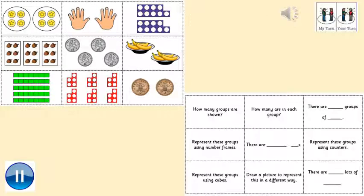So I've got a task here for you to do to get those brains working. We've got some groups in the pictures and we have some questions. Pick a picture, pick a question and answer it, simple as that. So if I'm looking at the picture with the hands, how many groups are shown? There's two groups. Pick another picture, pick another question — represent these groups using number frames. Where it says using counters or cubes, you can either draw the picture or represent it using something you might have at home that's the same, like counters, Lego, Duplo, anything that's the same and you've got lots of.